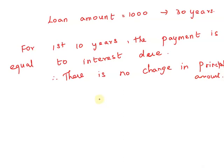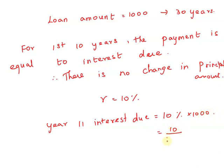The rate of interest R equals 10%. For year 11, the interest due equals 10% of 1000, which is 10 divided by 100 times 1000, which equals 100.